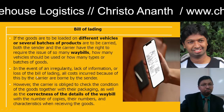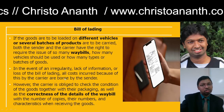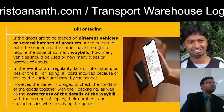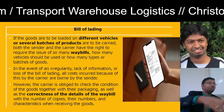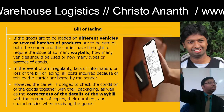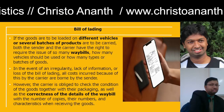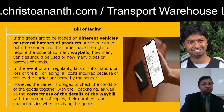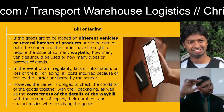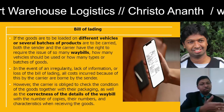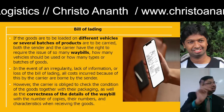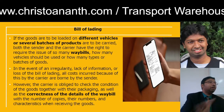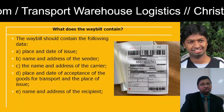If there is any irregularity, lack of information, or loss of the Bill of Lading, all costs incurred are borne by the sender. The sender must be more responsible. You cannot say the problem happened in transit and deny responsibility — everything is borne by the sender. The carrier must verify all conditions when receiving goods. As the receiver, if it is not verified properly, you can send it back to the sender, and all costs should be borne by the sender. The sender must be very careful in verifying all details before sending the consignment.